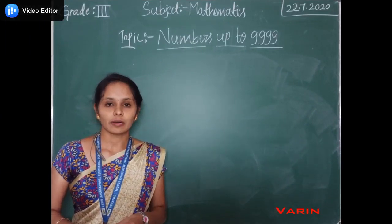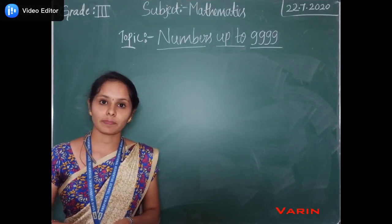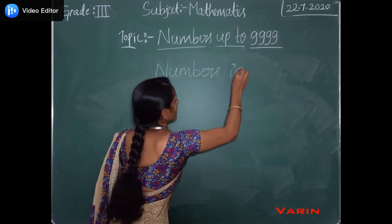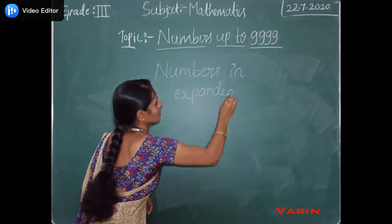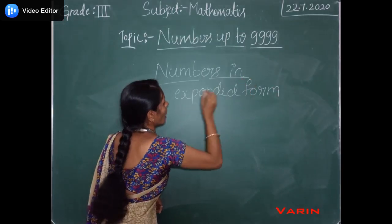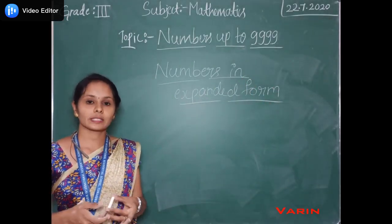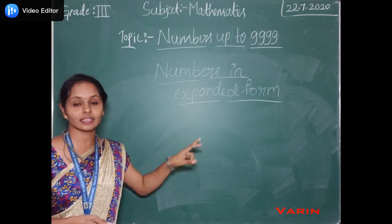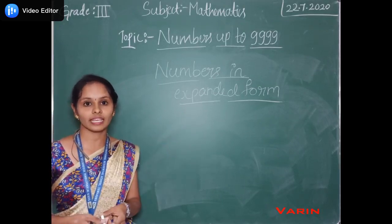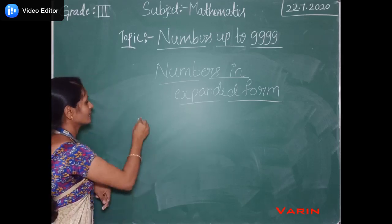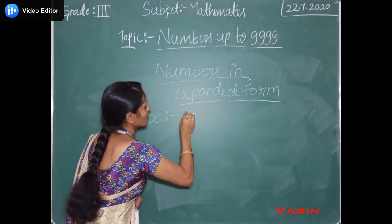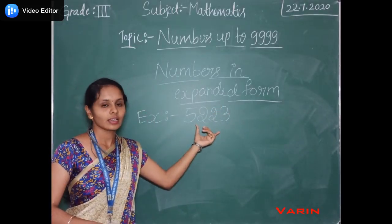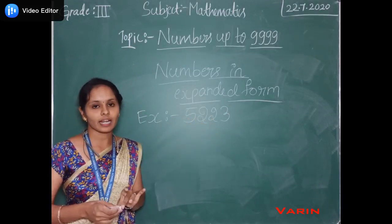Now we will study the numbers in expanded form, or how to expand a number. Writing numbers in expanded form means it is the sum of the place values. Before writing the expanded form, we have to find the place value of each digit. Let us consider the number 5223. Our task is to write this number in expanded form.